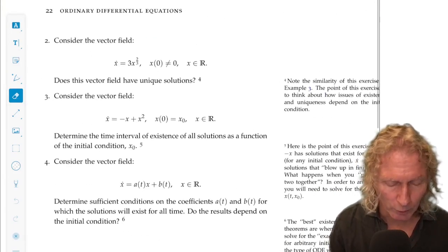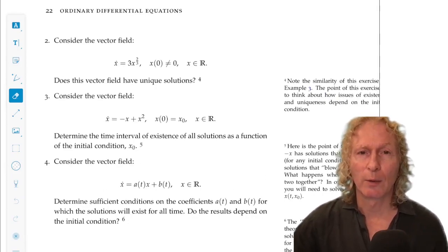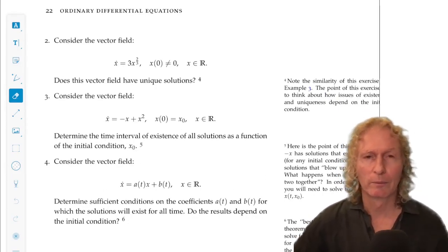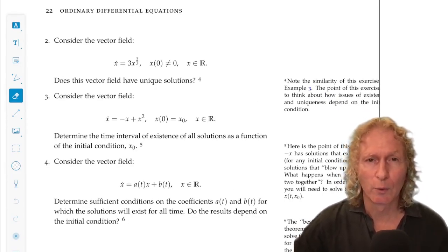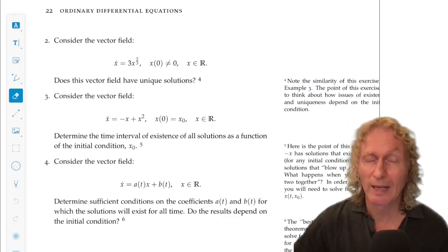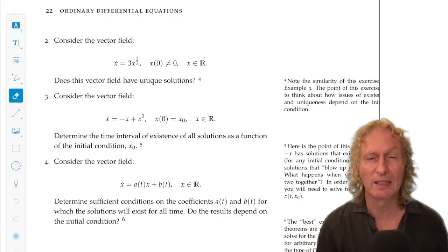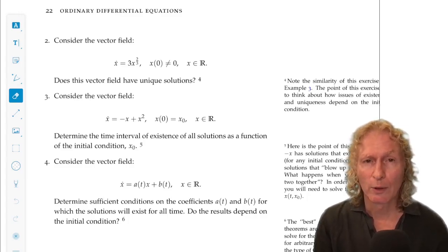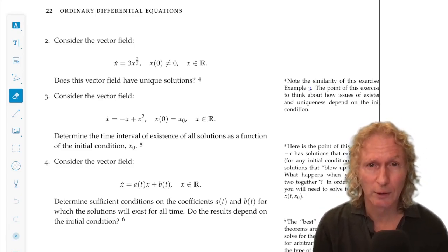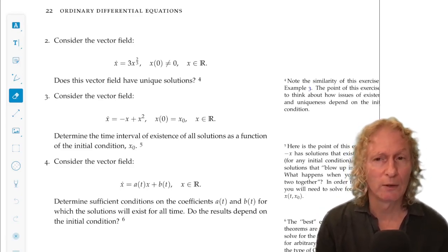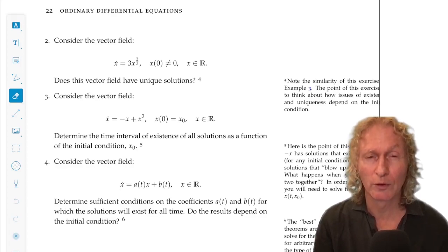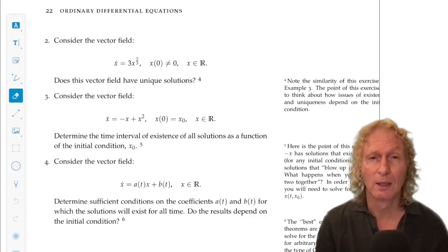Okay, problem two, we've already seen. That was the example of the ODE that for a given initial condition, x equals zero in this case, had an infinite number of solutions, but what I want you to look at now is if you look at a different initial condition, does it have a unique solution? And remember, the reason it had an infinite number of solutions was because it was non-differentiable at the origin.